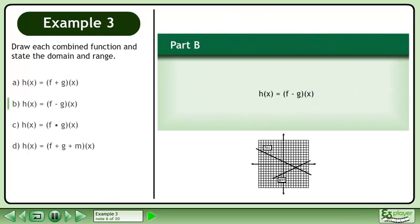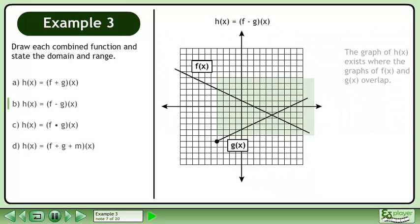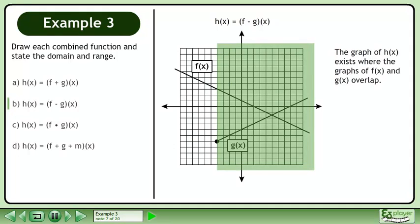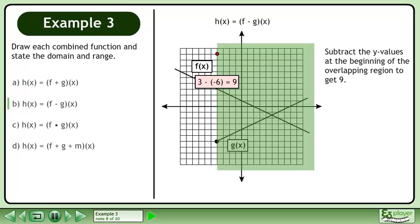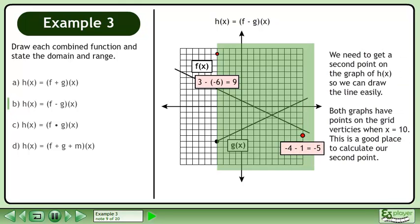In part b, we'll graph h equals f minus g. The graph of h exists where f and g overlap. Subtract the y values at the beginning of the overlapping region to get nine. We need to get a second point on the graph of h so we can draw the line easily. Both graphs have points on the grid vertices when x equals ten.